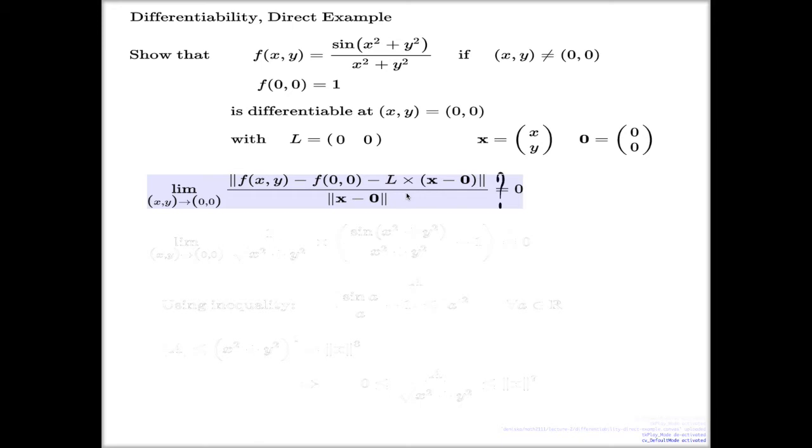For the linear map it was easy because the whole numerator was just zero, constantly zero. No problem for this function. Well, I'll make substitutions. Here's my substitutions.